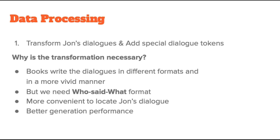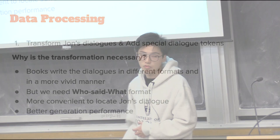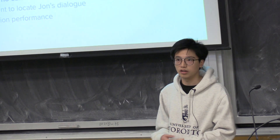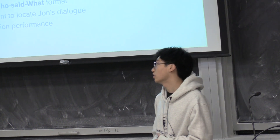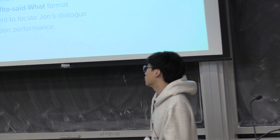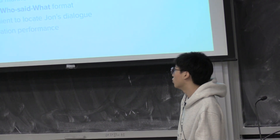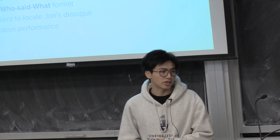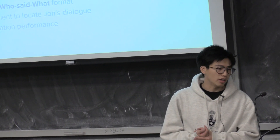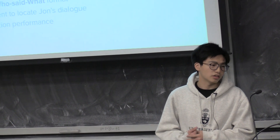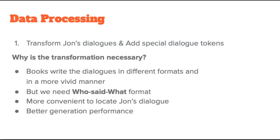Why is this necessary? Because books usually write dialogues in different formats, in a more vivid manner with a lot of descriptions attached nearby, rather than simply stating who said what, which is what our model data needs. By doing the transformation, it makes it more convenient to locate Jon's dialogue in the generation, and it also gives better generating performance of the model.